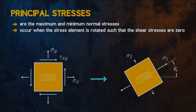The rotation angle which gives us the principal stresses is denoted using the symbol theta p. Because it is the maximum normal stress at the location of our stress element, being able to calculate sigma 1 can be important for predicting failure.